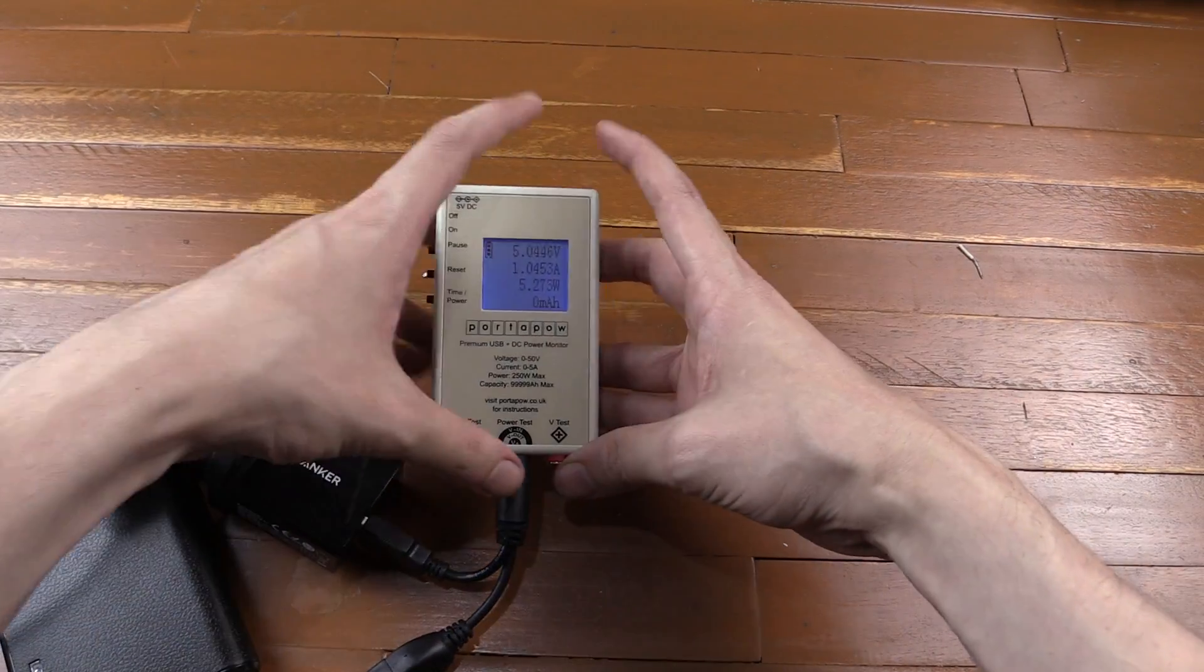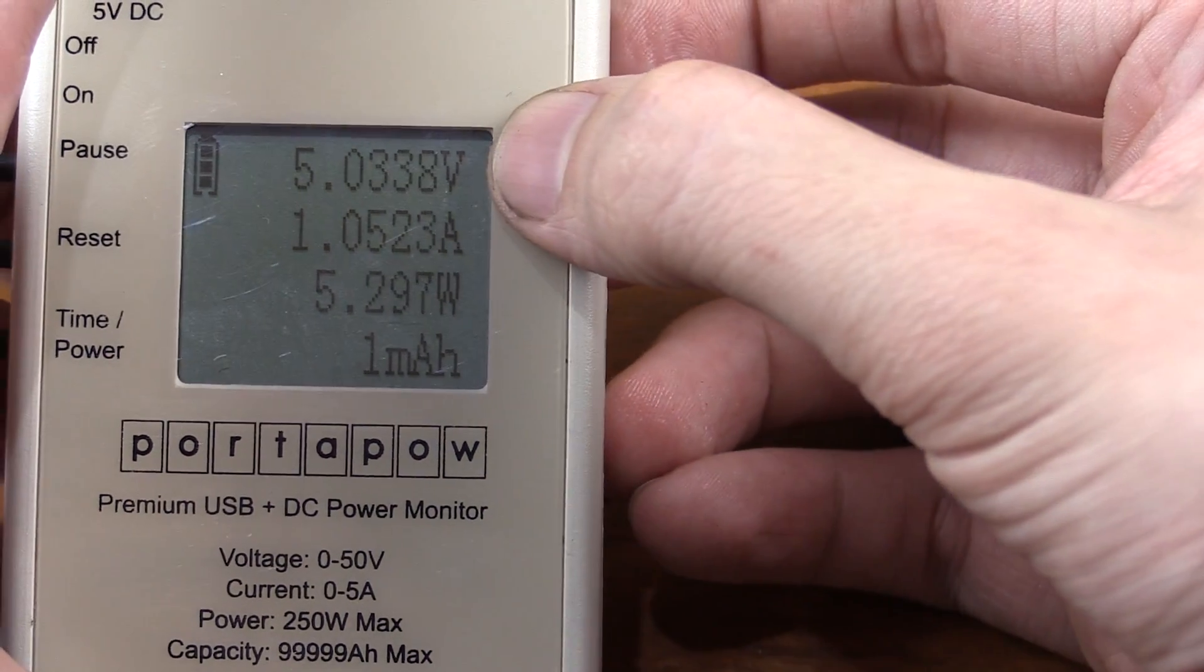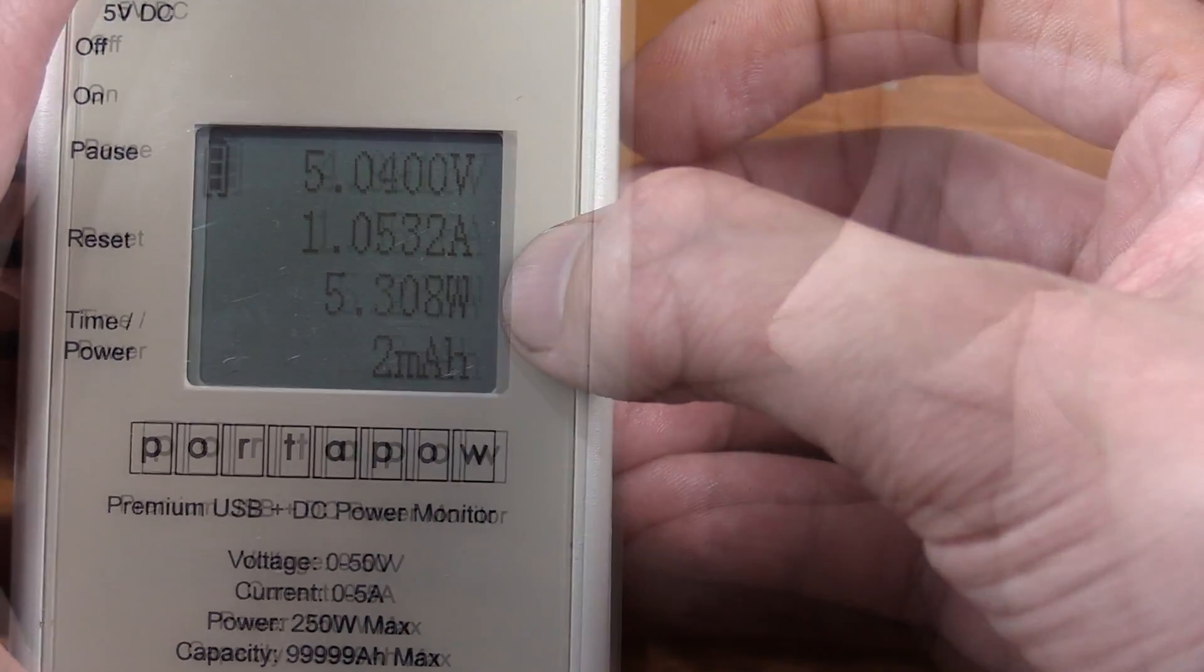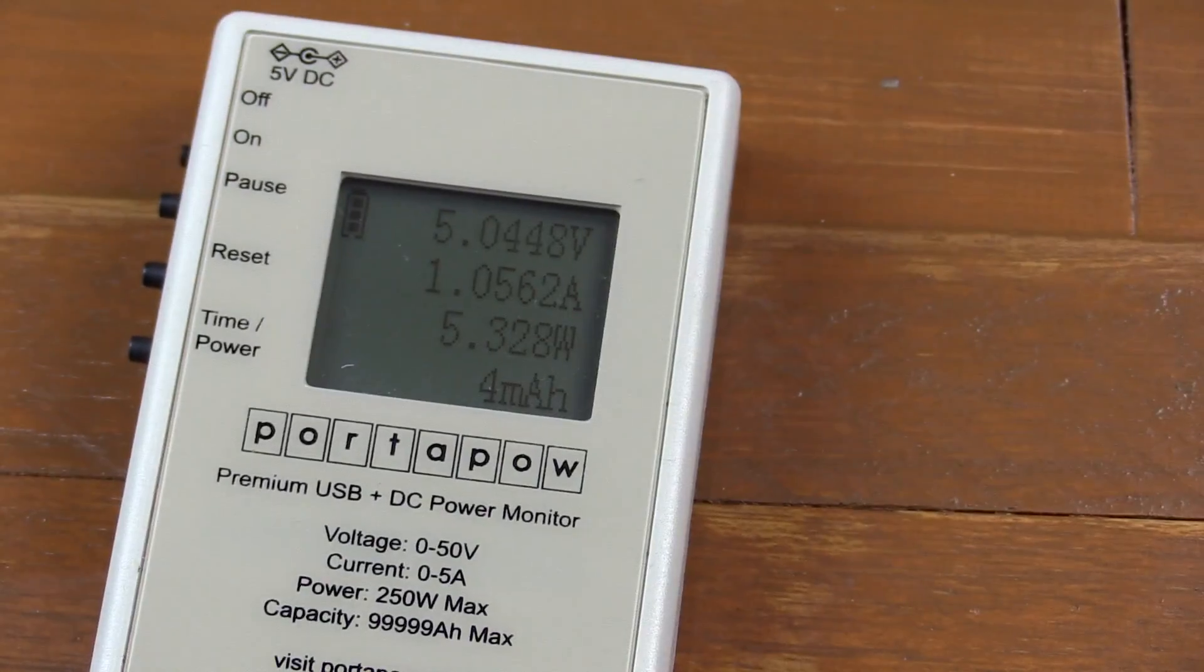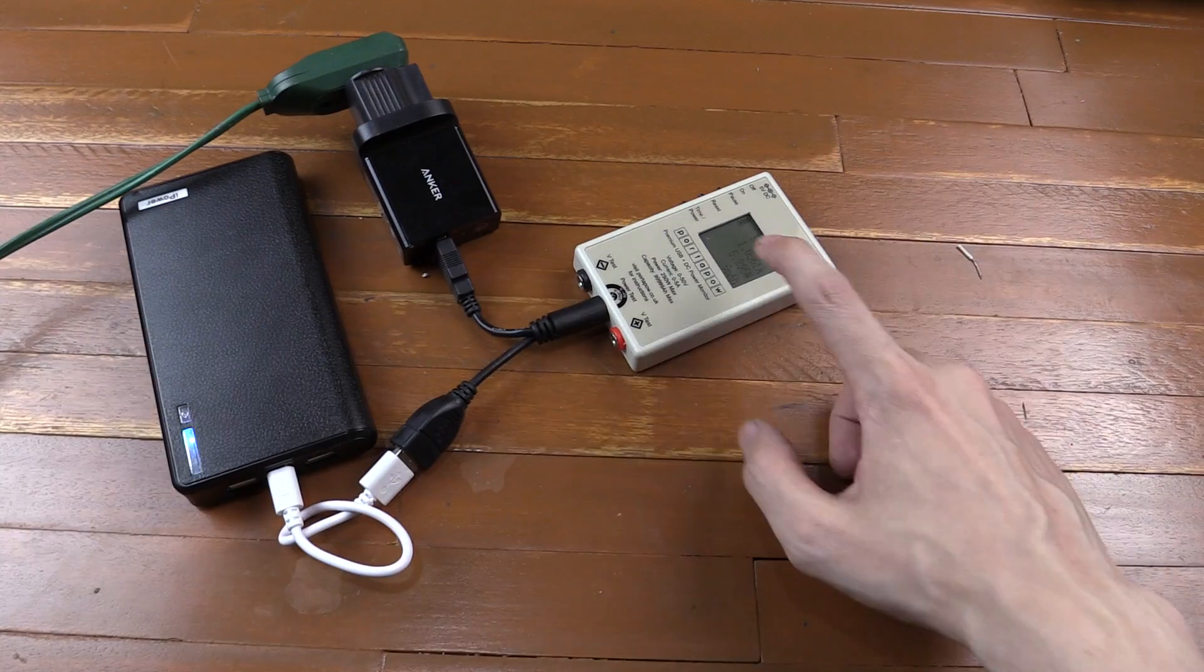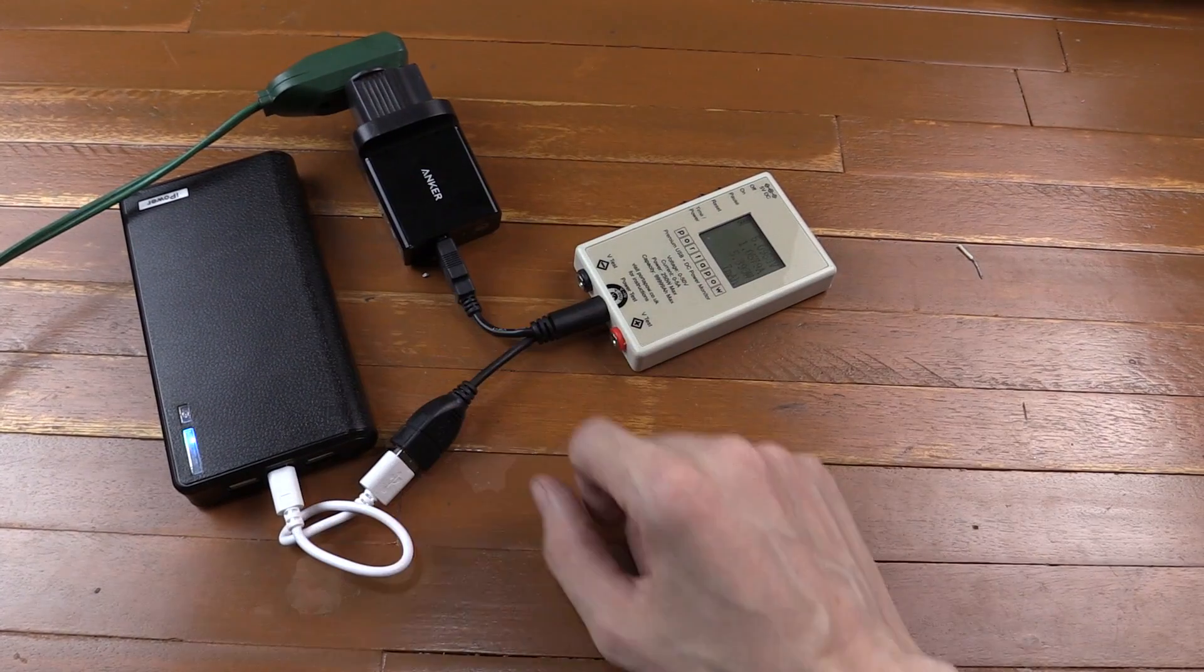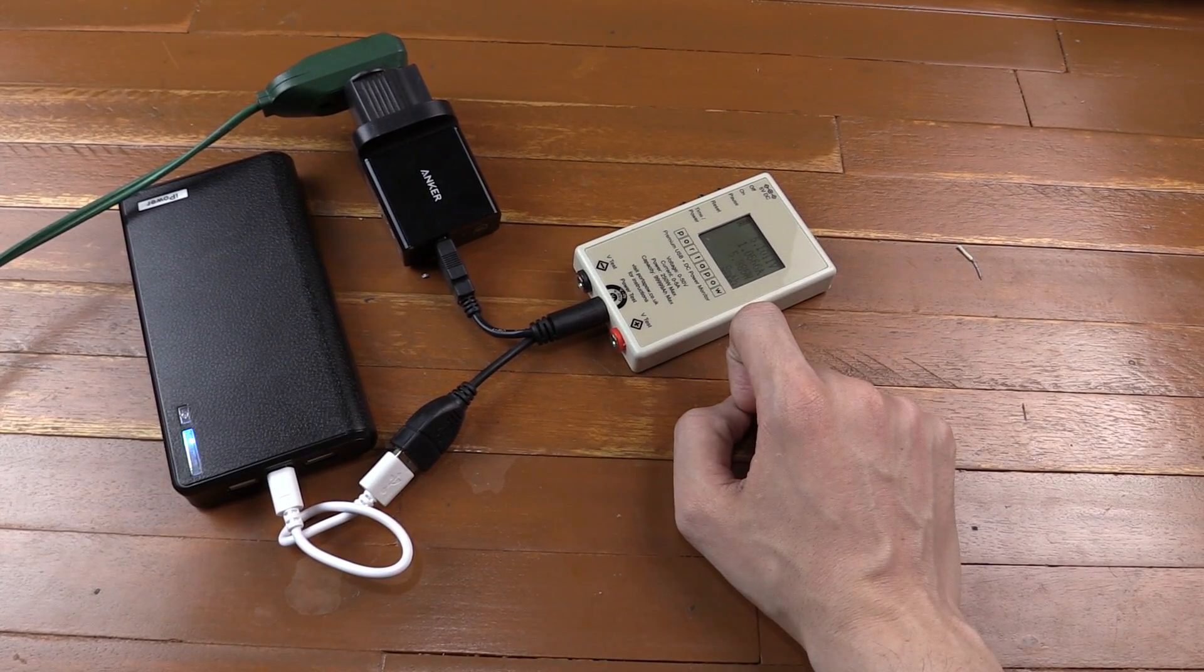And then if you look at the screen here, let me zoom in, you can see that it's at 5 volts, 1 amp. So it's charging around 5.3 watts and right now it's consumed the equivalent of 4 mAh. So what we can do is we can just leave this here. It's going to take quite a while to charge at 1 amp. So we'll just leave this here and then we'll come back and see how much it actually consumed to fully charge this thing. And I'm going to guess it's going to be quite a lot lower than 30,000 mAh.